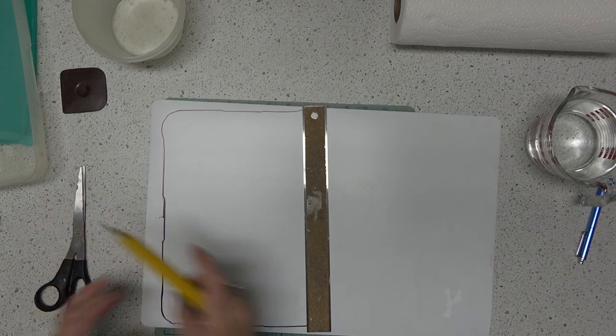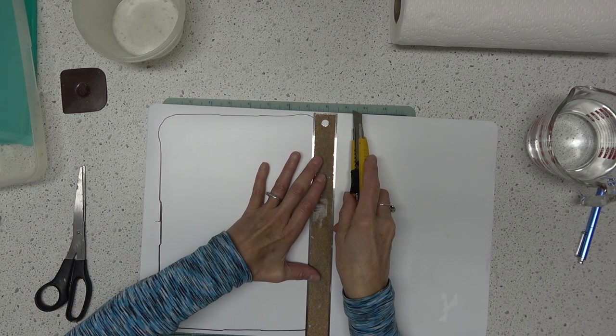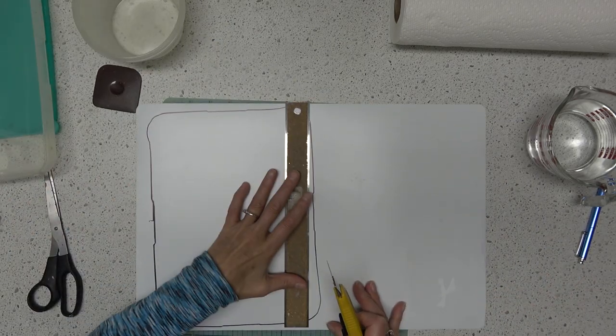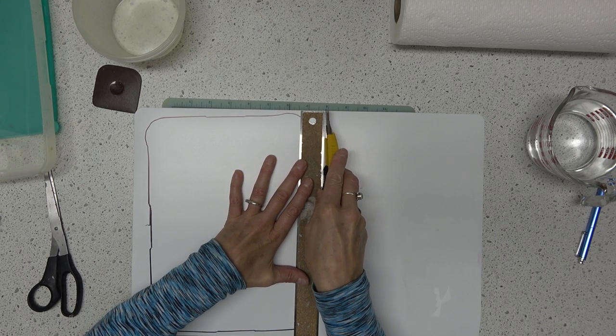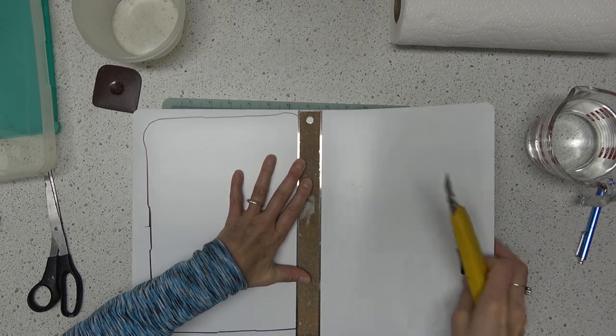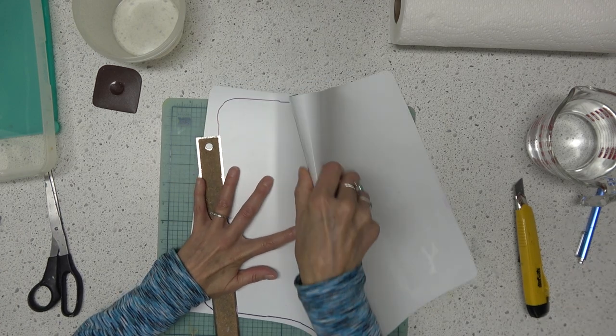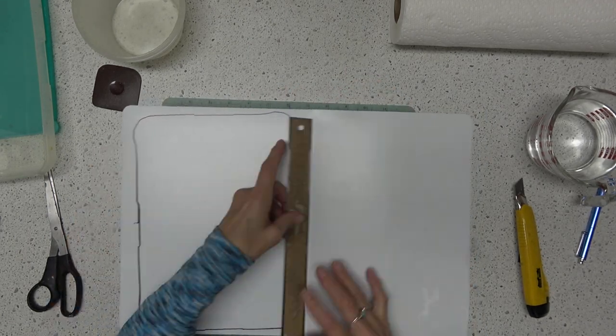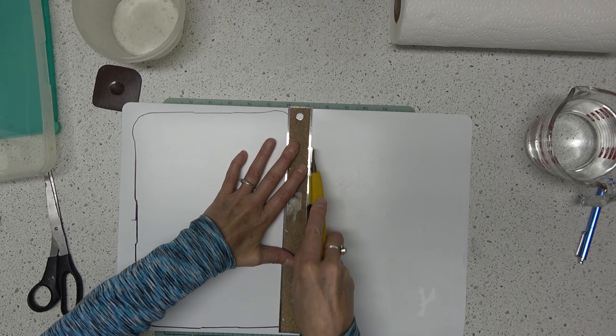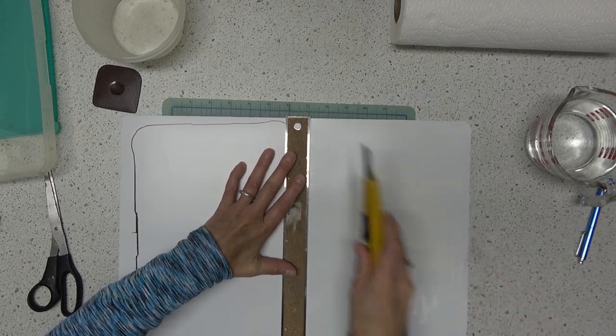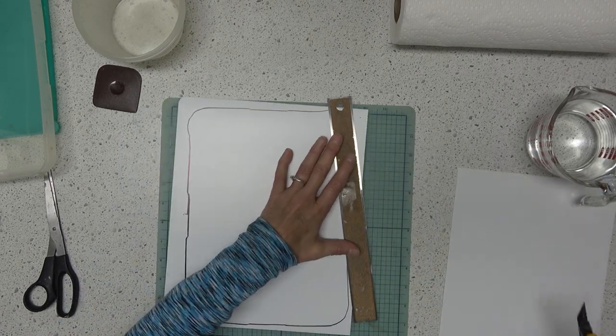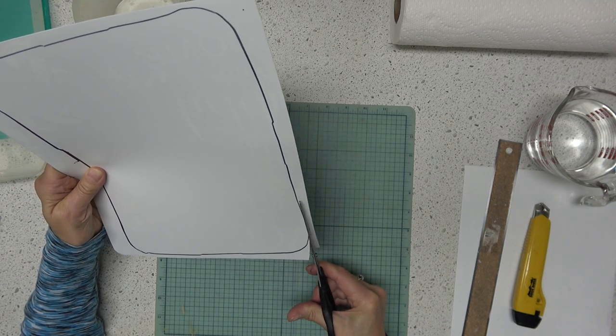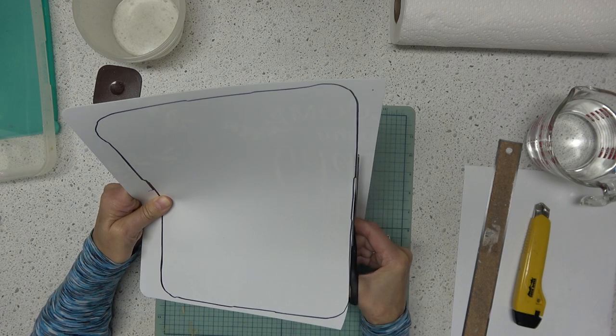Now I'm just going to cut off the excess. If I make a mistake, I have enough to make two just in case. I don't see that happening. I'm going to use scissors. Doesn't have to be perfect or exact. If you want, you can use a ruler on the straight edges.